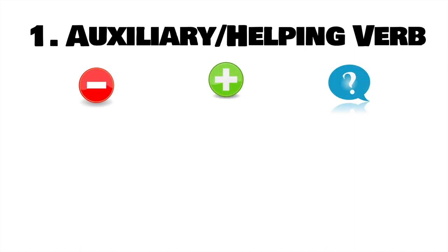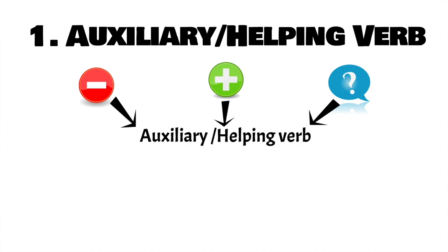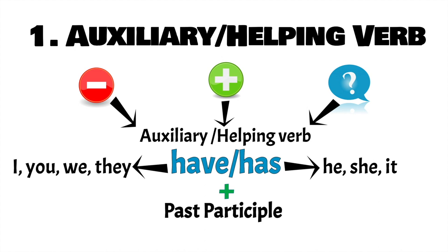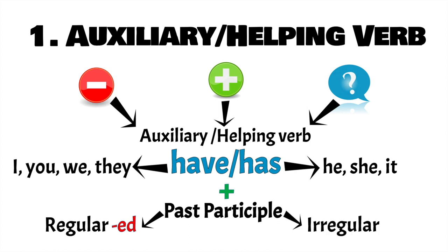For a negative sentence, an affirmative sentence, or a question, we need an auxiliary. And that auxiliary or helping verb is 'have' or 'has'. 'Have' is for the I, you, we, and they pronouns. 'Has' instead, we use it for he, she, and it. Then we need a past participle for all these types of sentences. The past participle can be regular, so ends in ED, or irregular. And this is when you have to use your memory.